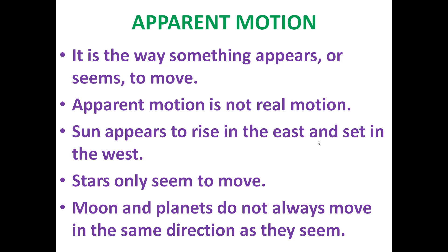Apparent motion is the way something appears or seems to move — it is not real motion, just how something appears to us. The sun appears to rise in the east and set in the west, but this is apparent motion. The sun is fixed; it is the earth that is moving. Similarly, stars seem to move, and the moon and planets do not always move in the direction they appear to move — these are all examples of apparent motion.